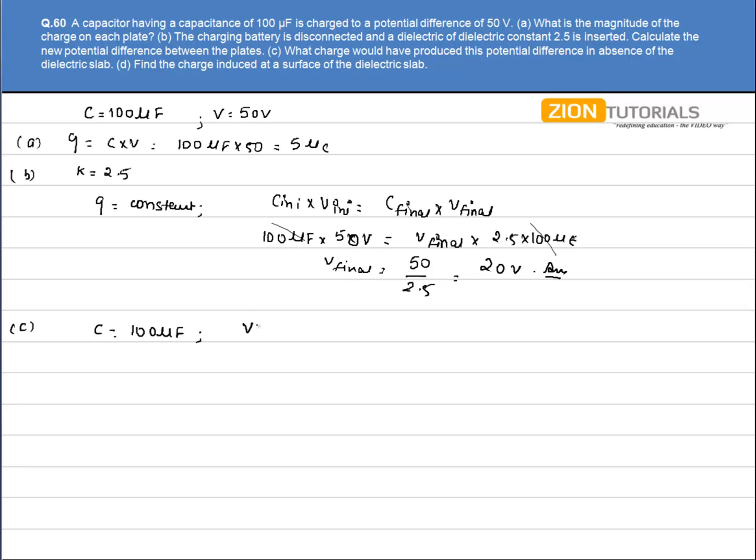To create a potential of 20V, we have Q equals CV. That is 100 into 20, which gives the answer 2mC. That is the answer.